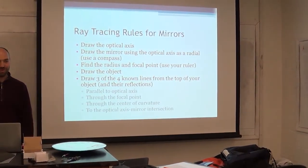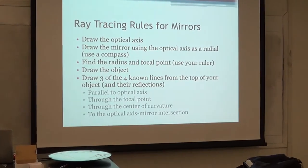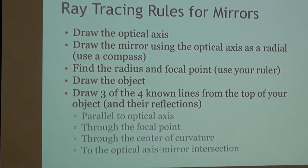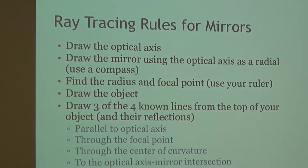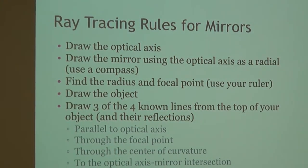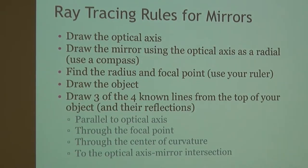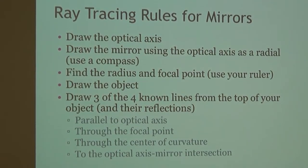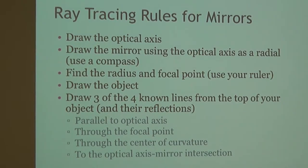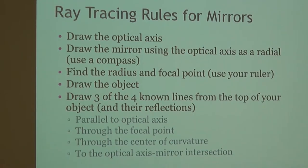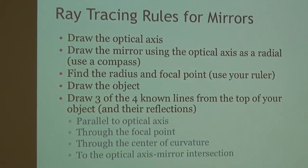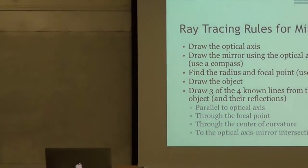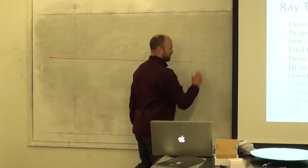Ray tracing rules — these are so important. Step number one: draw the optical axis. This is where your ruler must be used. That is your optical axis — you just draw a line. Step number two: draw the mirror, using the optical axis as a radial. That means you take your compass with its pointy end and drawing end, put your pointy end on the line, and draw your circle around it. That ensures the center of your circle is on the optical axis.